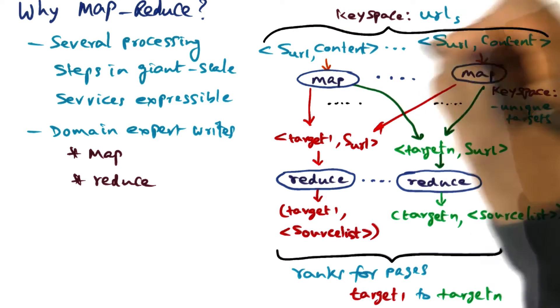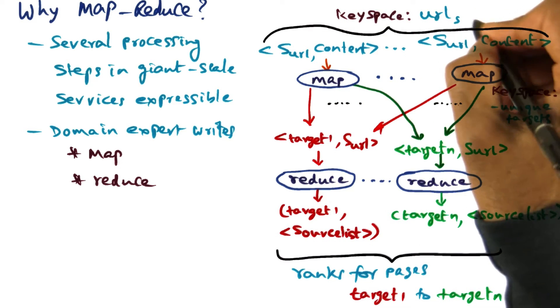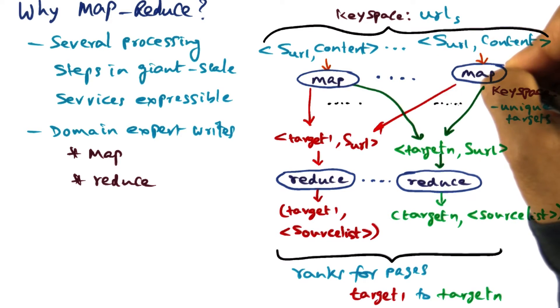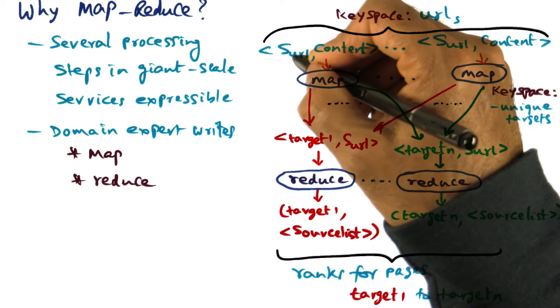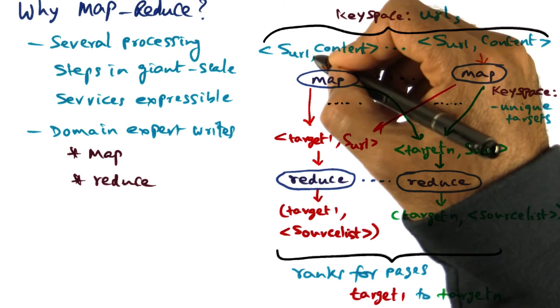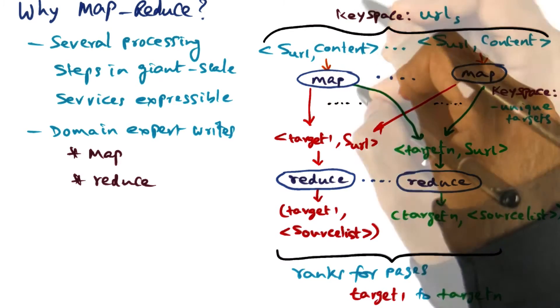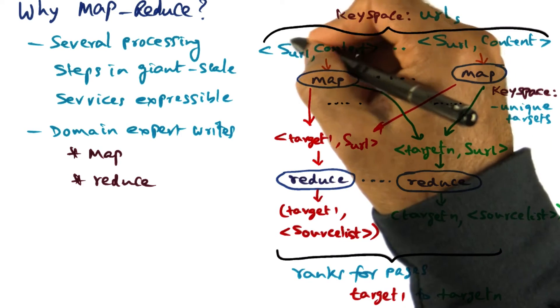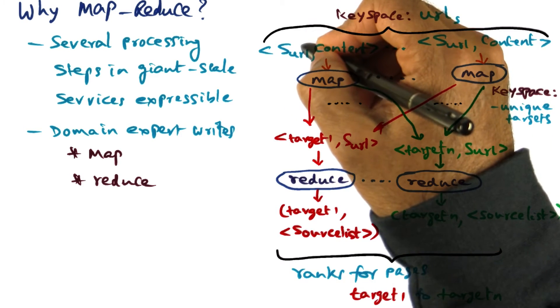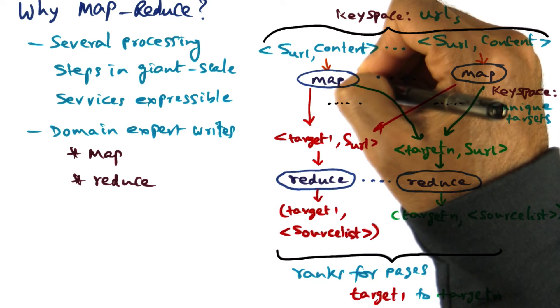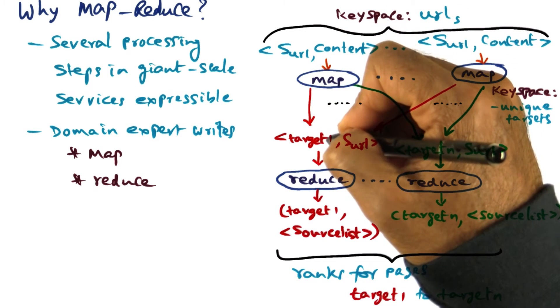So the key space that is input to this application is a set of URLs. And the key value pair that is coming into each of the mappers is a source URL and the contents of that web page that corresponds to this particular URL. So what this mapper is doing is, in the given page defined by this URL, the contents of which is the input to this mapper, it is looking for different targets.